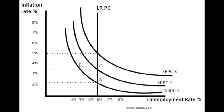What happens is if you try to move the unemployment rate below the natural rate, the economy will try to move back. So if you increase the inflation rate hoping to reduce unemployment below the natural rate, and then stop increasing the inflation rate, you'll end up with a new higher level of inflation but unemployment back at the natural rate — meaning the Phillips curve shifts out to the right.